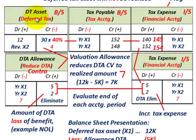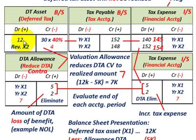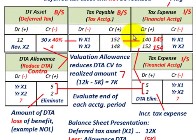For the deferred tax asset, we calculated that to be $12,000 — the $30,000 received in advance times the 40% tax rate. So we debit or increase our deferred tax asset on the balance sheet by $12,000. Tax expense is simply a plug — the balance between the credit of $152,000 in taxes payable and the debit of $12,000 for the tax asset. We need another debit to tax expense of $140,000, so $140,000 plus $12,000 balances with the $152,000 credit.